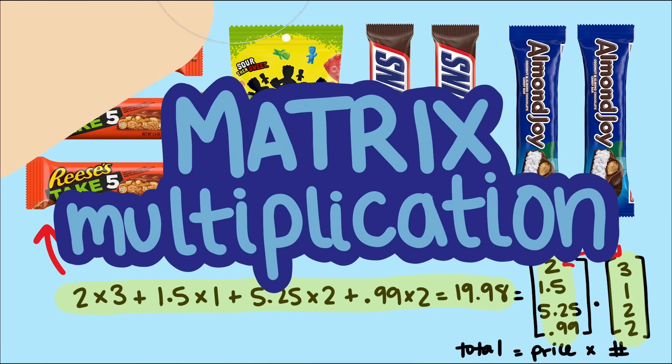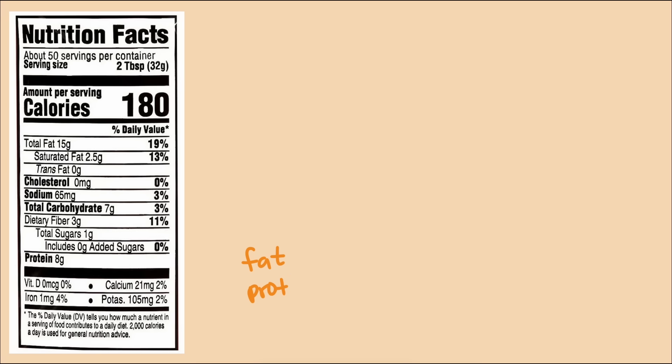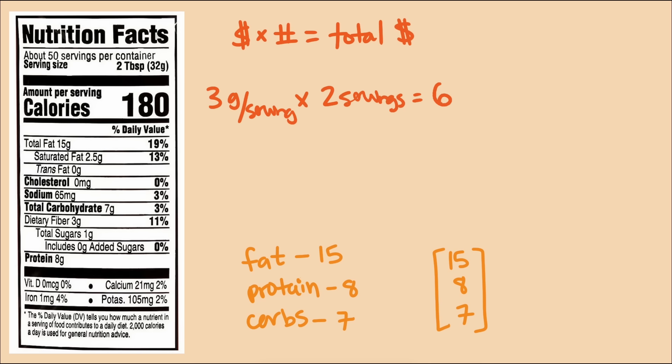So how does this relate to matrix multiplication? Let's use a context we've used before, nutritional information of foods. Like the simple price times number of items equal total cost example, the calculation of total nutrients are the same. The grams of fat per serving times the number of servings will equal the total grams of fat. But with food, fat is not the only nutrient we might care about. We might want to know the total amount of protein and carbs as well.